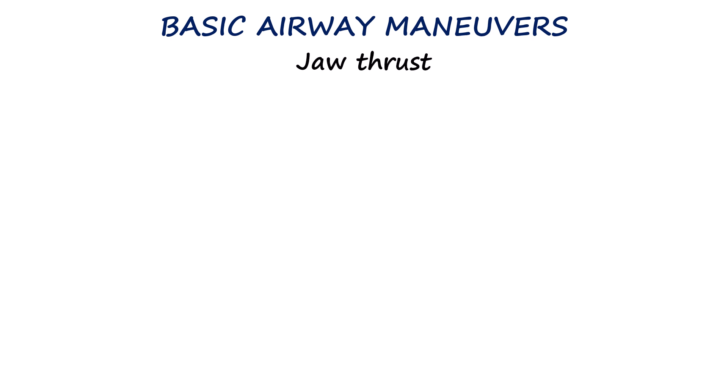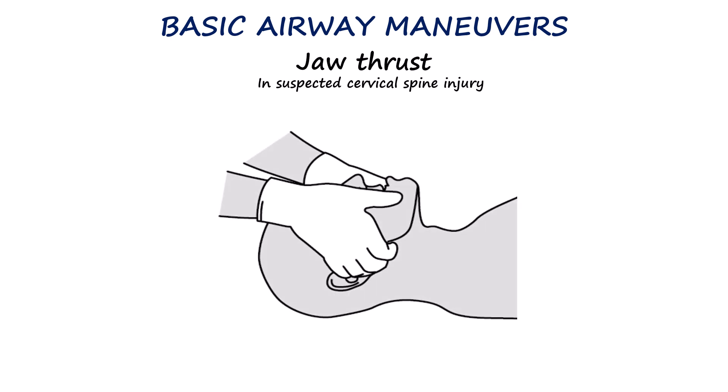In cases of suspected cervical spine injury, the jaw thrust maneuver is the preferred method. To perform this, the rescuer places their fingers behind the angles of the mandible on both sides of the face and pushes the jaw forward. At the same time, the thumbs can be used to gently lift the chin if needed. This forward movement of the mandible lifts the tongue and epiglottis away from the back of the throat, opening the airway without moving the cervical spine.